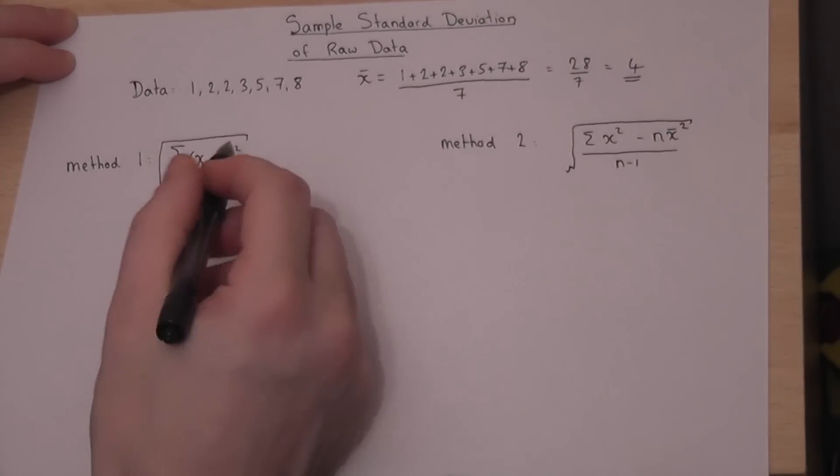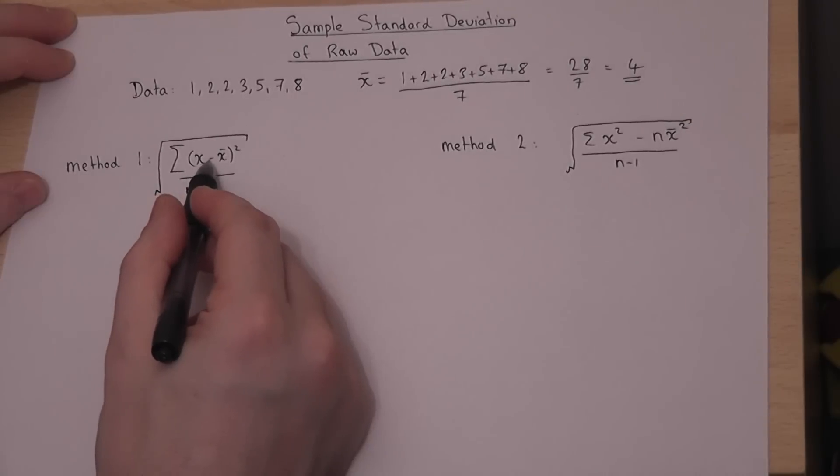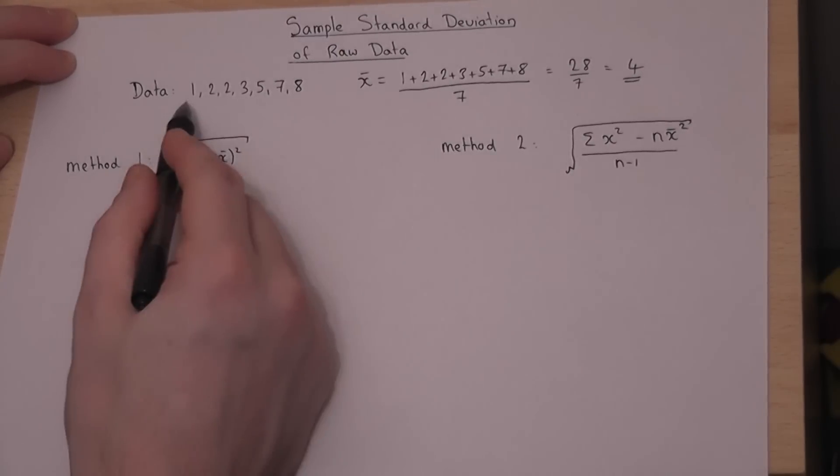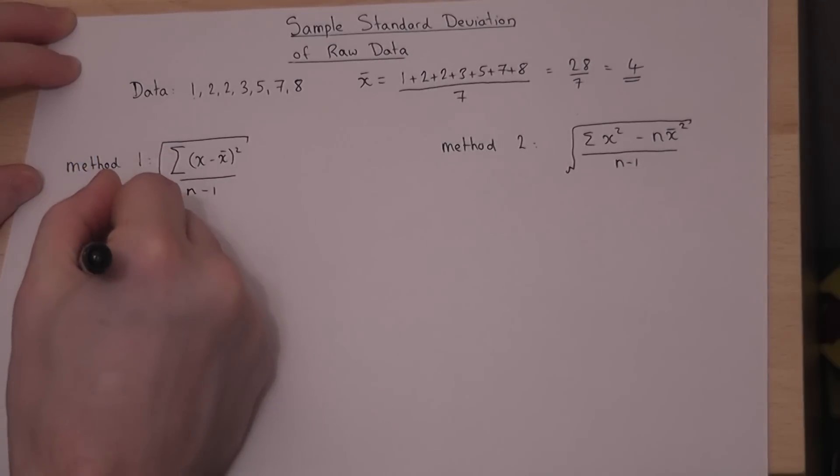Now, method 1 finds the difference of each data value from the mean, squares it, adds it together, divides by n minus 1, then finds the square root. To do this, we'll use a table form. I'll put the data down in columns, like so. That's my data.